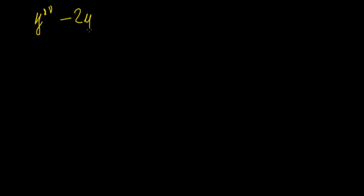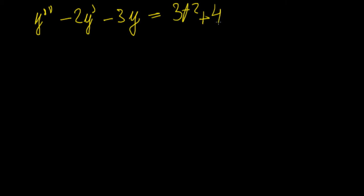In this video we're going to be doing another example on undetermined coefficients for solving second order differential equations that are non-homogeneous. In this example I am going to use the equation y double prime minus 2y prime minus 3y equals 3t squared plus 4t minus 5.